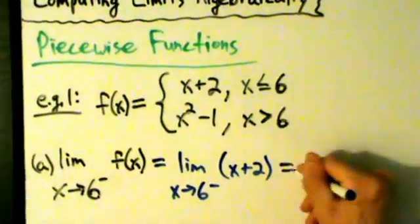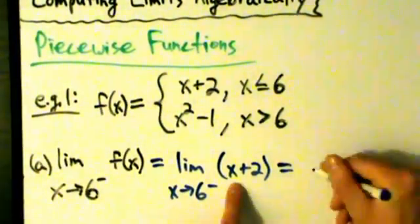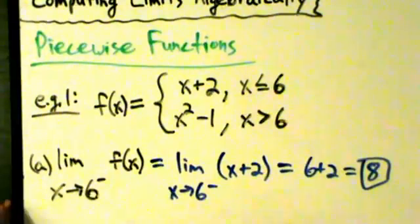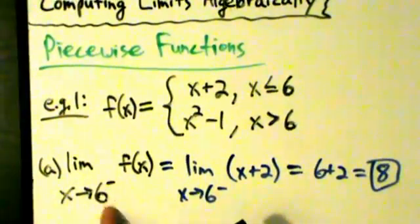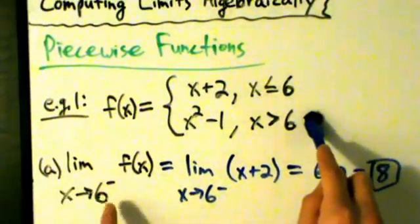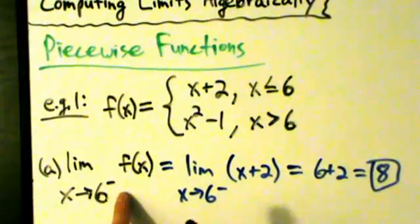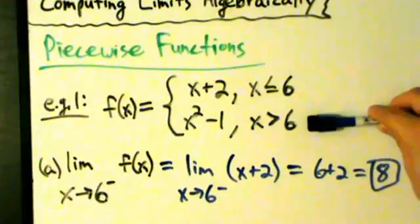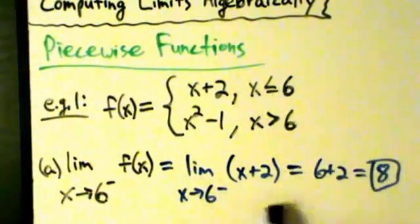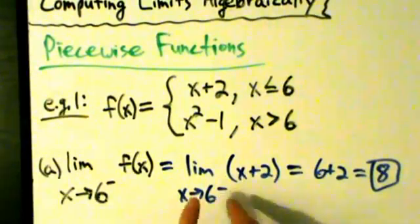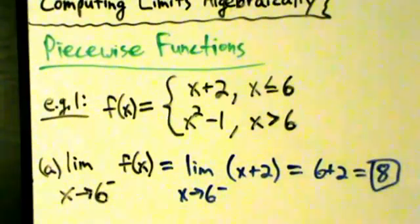Now we can just do straight-up direct substitution. That's going to equal 6 plus 2, which of course is 8. So first we checked: is 6 a point where the function breaks into pieces? Yes. Then we checked: is it a left or right-hand limit? It's a left-hand limit, so x is always less than 6, meaning we only use the first piece. We rewrite the limit using x plus 2, and for the direct substitution part the fact that it's one-sided doesn't matter — we just put in 6 and get 8.